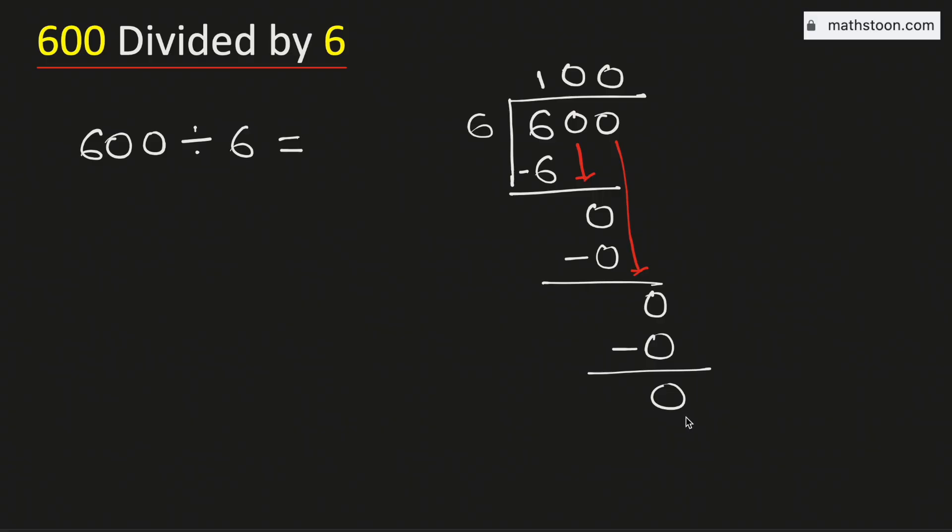As we have obtained the number 0 and we have no number to bring down here, so we will stop. Therefore, 600 divided by 6 is equal to 100 and this is our final answer.